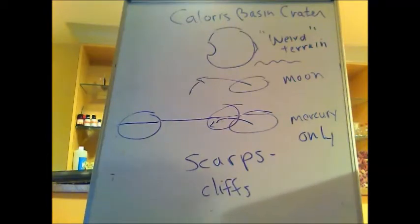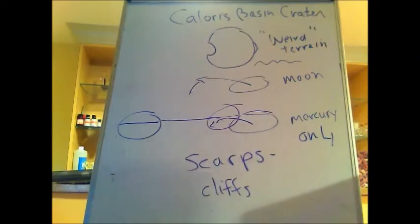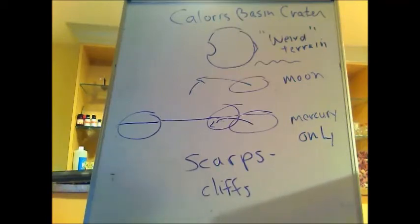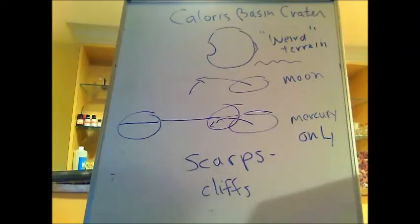Mercury has an iron core that accounts for 60% of its mass. It does have a magnetic field, while the Moon has no magnetic field. The core of Mercury, even though it's 60% of its mass, is not moving nearly as rapidly as the Earth's core, so the field is pretty weak but nevertheless a measurable magnetic field.